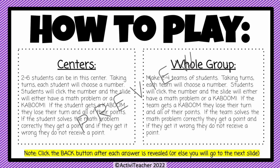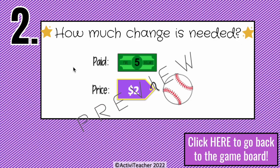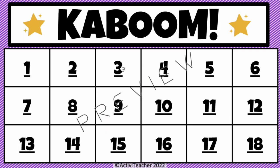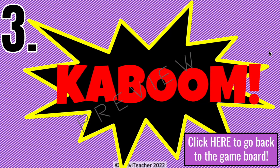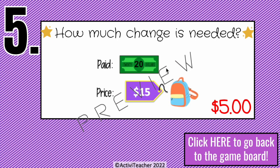The last game is Kaboom. You can make two to four teams of students taking turns. Each team chooses a number, clicks it, and the slide will either show a math problem or a Kaboom. If they get a Kaboom, they lose their turn. If they solve the math problem correctly, they get a point; if wrong, they get no point. For example, a team picks number two — they paid five dollars and the price is two dollars, so they should get three dollars back. If they pick number three and get a Kaboom, they lose their turn.